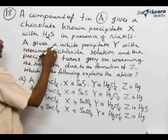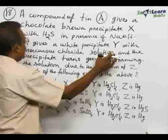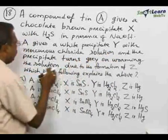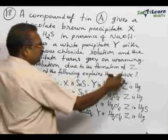A gives a white precipitate Y with mercurous chloride solution and the precipitate turns gray on warming the solution due to the formation of Z. Which of the following explains the above?